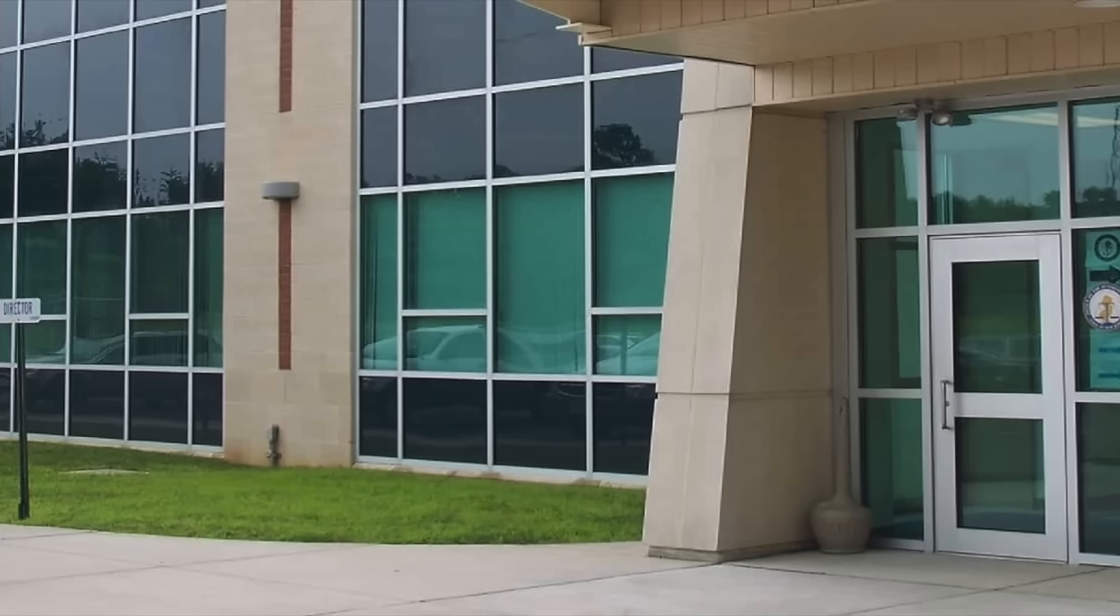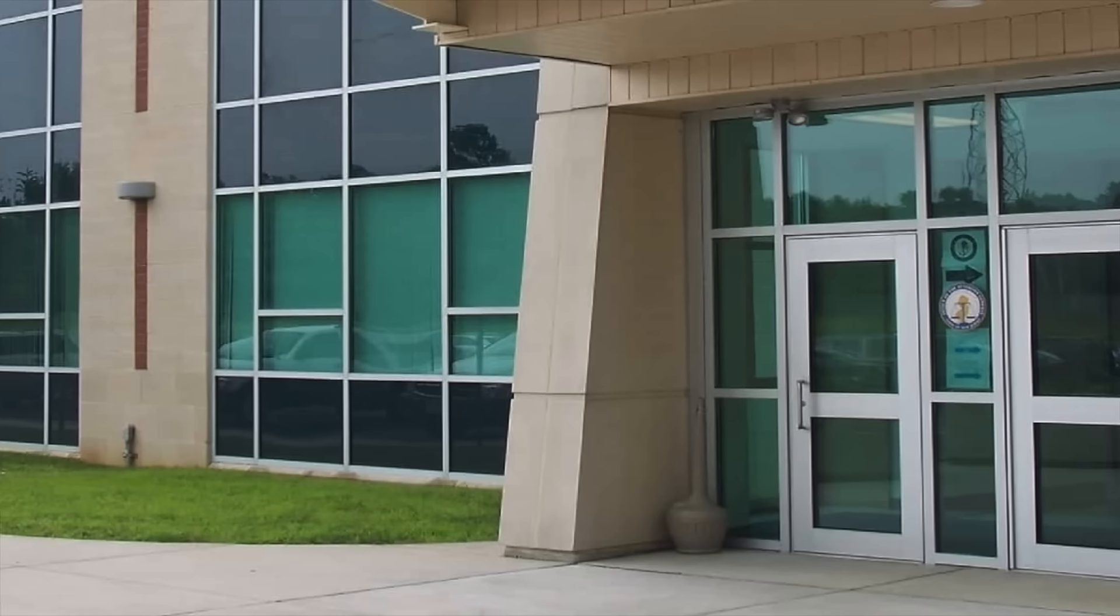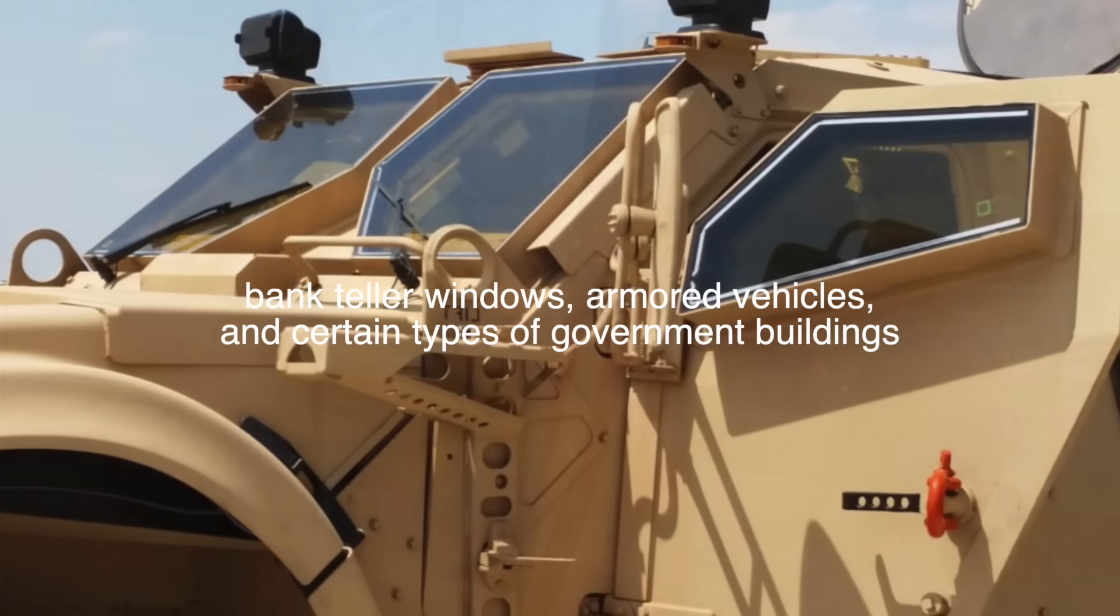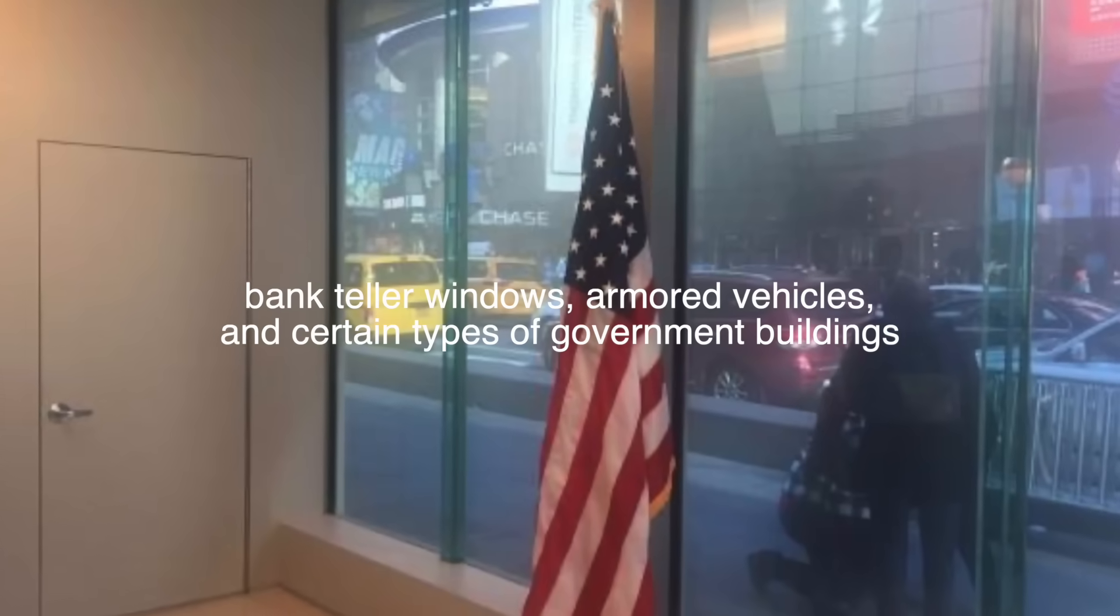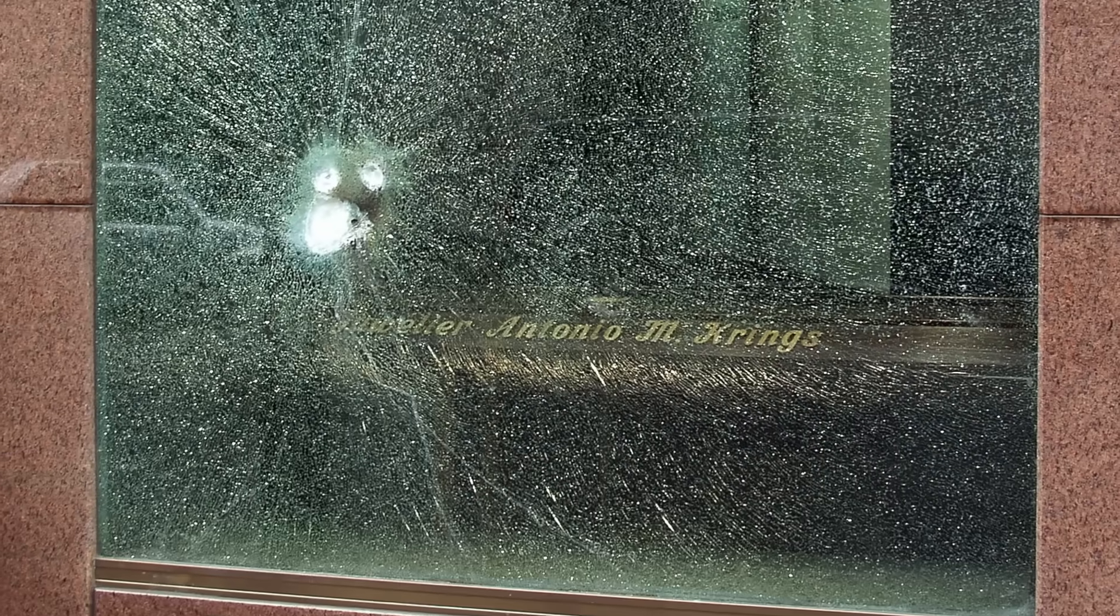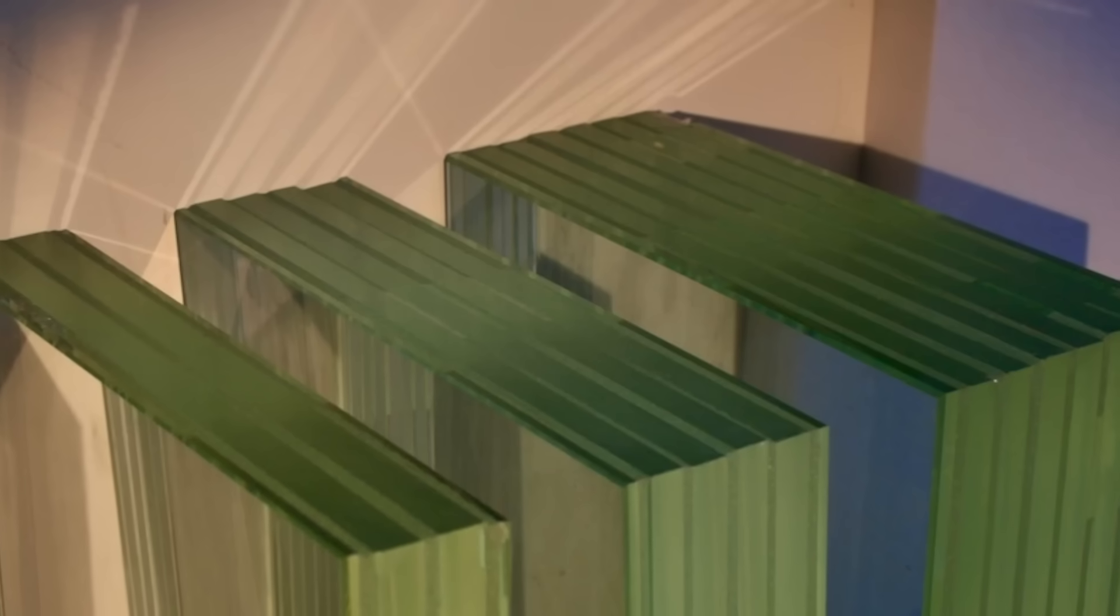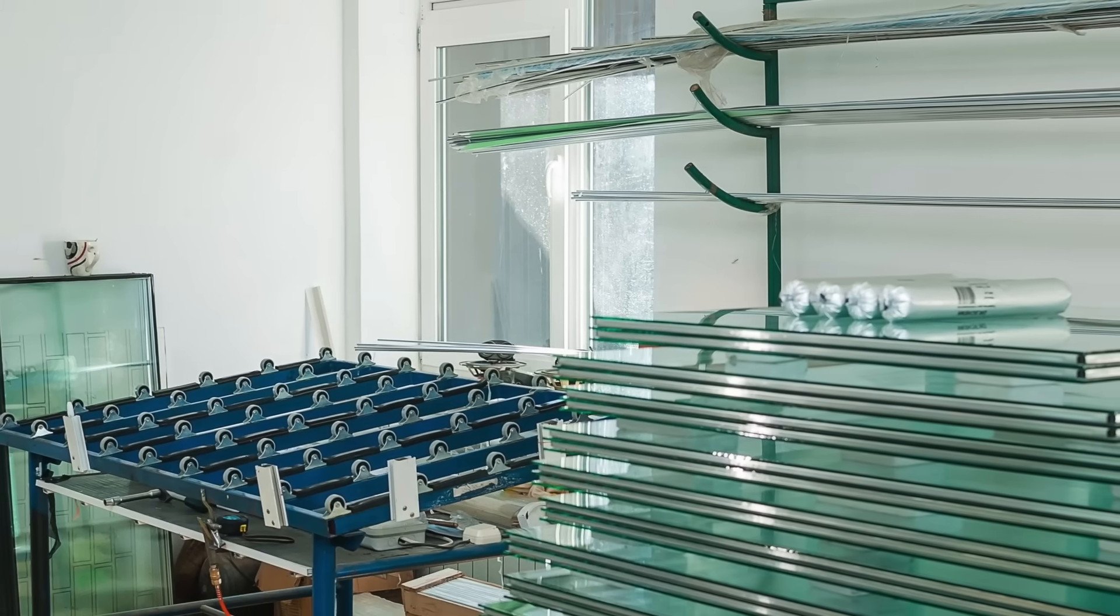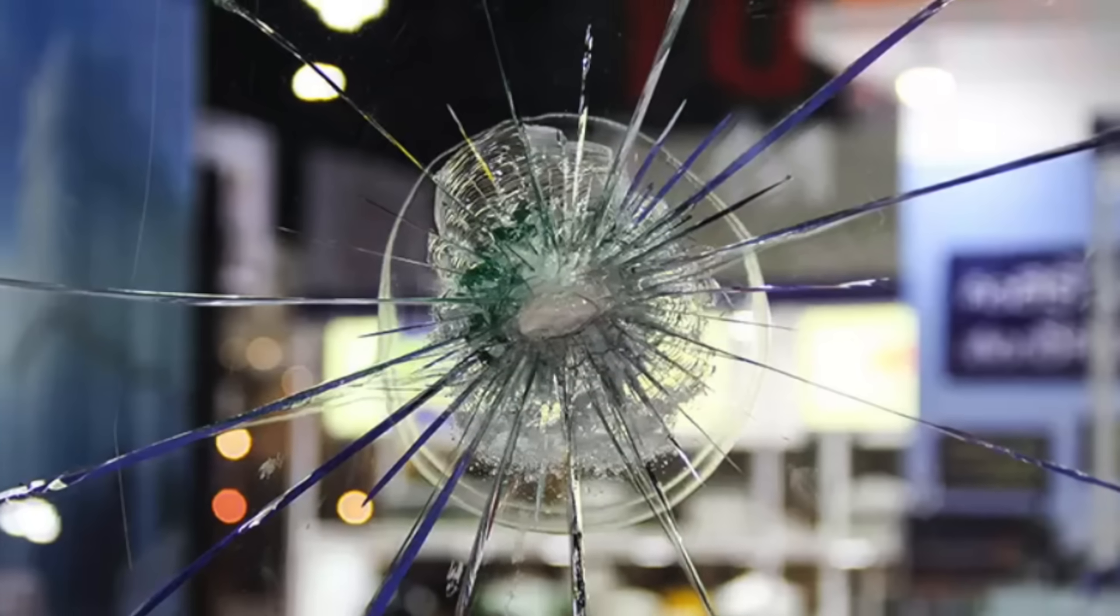Bullet-resistant glass is used in applications where there is a risk of gunfire, such as in bank teller windows, armored vehicles, and certain government buildings. The level of protection depends on the thickness and composition of the layers, with thicker and more complex constructions providing higher protection. It is highly effective at stopping bullets but also very heavy and expensive, making it suitable only for certain high-risk applications.